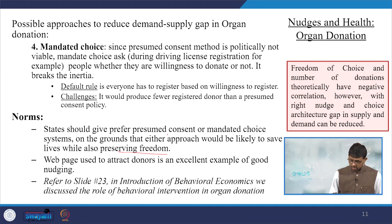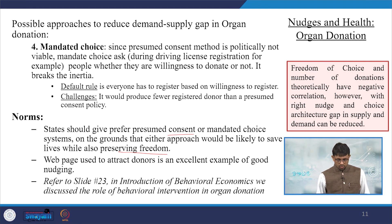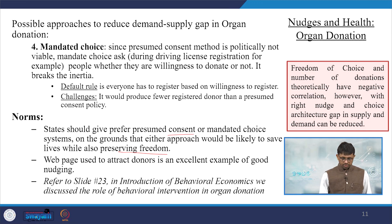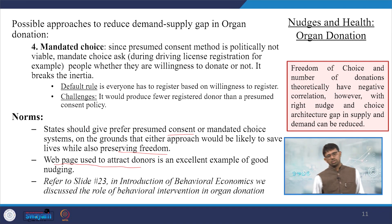Some important norms: the state should prefer presumed consent or mandated choice systems on the grounds that either approach is likely to save lives while also preserving freedom. If both cases are taken together, it is really good. A web page should be there to attract donors, which is considered an excellent nudge. If more information is given to attract donors, that would be a better nudge.